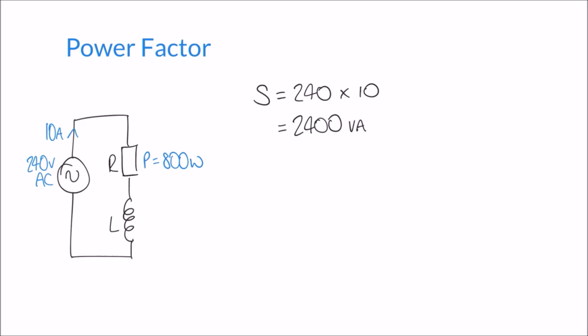Now because we know the real power of 800 watts and the apparent power of 2400 VA, we can calculate the power factor: PF equals P over S, which is 800 divided by 2400, giving a power factor of one third. What we're really saying is that of all the power being dissipated in the circuit, only a third of it is useful — two thirds of it is reactive power, which can generally be thought of as wasted power. In many industrial scenarios we want to try and minimise reactive power, and that's achieved by something called power factor correction.